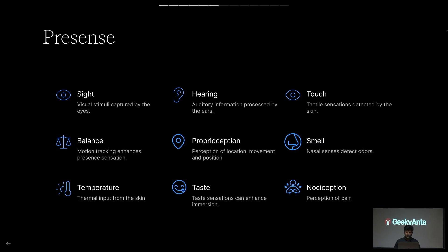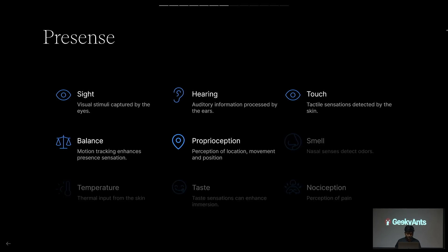Immersion is easy to achieve, but presence is a little harder because it requires incorporating many other elements like smell, touch, and everything else. We can achieve presence through sight — seeing visuals in a virtual zone. Touch is achieved through controllers; when you have an HMD (head-mounted display), you have controllers, and whenever you do an action you feel haptic feedback on your hand, simulating the feeling of actually touching something physically.